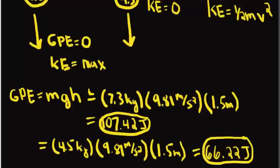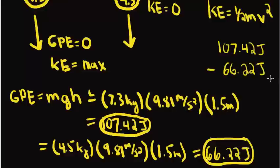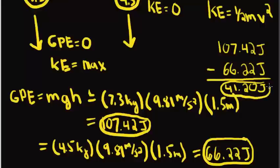Now, for the second part of the problem, they want to know the difference. So, all we have to do is take our two values that we found: 107.42 joules subtracted by 66.22 joules. And we find this to be 41.2 joules, which is the difference in kinetic energies between the two balls.